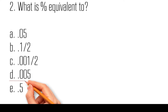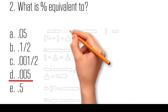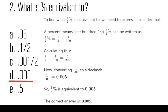To find what half a percent is equivalent to, we need to express it as a decimal. A percent means per hundred, so half a percent is equal to one-half times one over one hundred, which equals one over two hundred. Converting one over two hundred to a decimal gives 0.005. So half a percent is equivalent to 0.005.